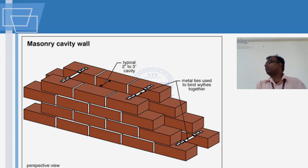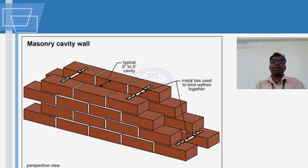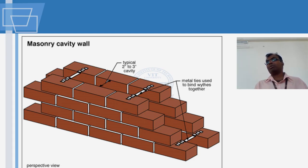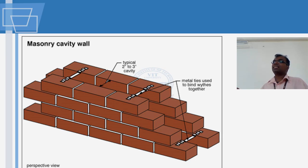We arrange the bricks in such a manner that vertical joints are avoided. And even if in a corner you feel that there is a vertical joint coming, you arrange it in such a manner that it keys into position. These metal ties are being used in a cavity wall.